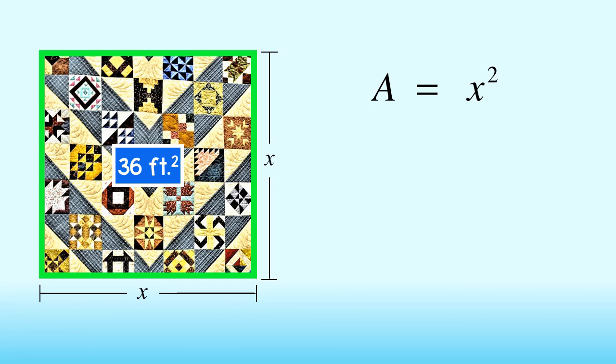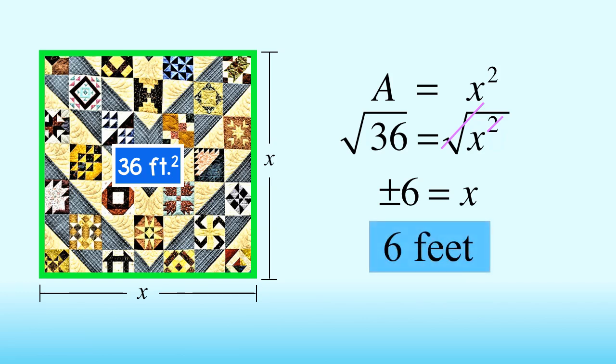The area of the quilt is 36 square feet. We can now solve for x by taking the square root on both sides. x is equal to positive and negative 6. Since the lengths cannot be negative, the length of one side of the quilt is 6 feet long. Good job!